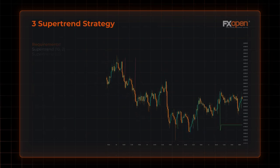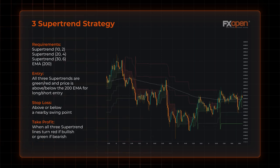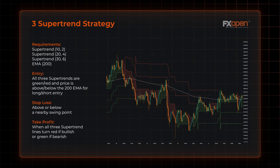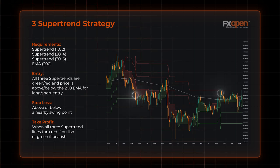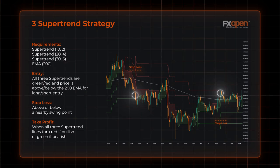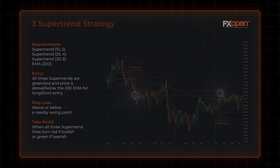Three Supertrend strategy. This strategy seeks extra confirmation using three Supertrends and an exponential moving average. The EMA helps classify the trend in another way. This strategy requires three Supertrends with varying settings: you may use 10 and 2, 20 and 4, and 30 and 6, along with a 200-period EMA. Traders may wait until all three Supertrends are green and price is above the 200 EMA for a long entry, and when all three Supertrends are red and price is below the 200 EMA for a short entry. Stop-loss may be above or below a nearby swing point. You may close the trade when all three Supertrend lines turn red if bullish, or green if bearish.